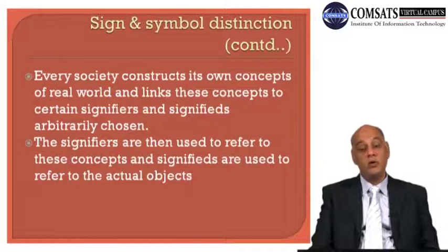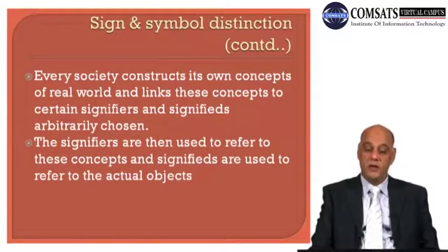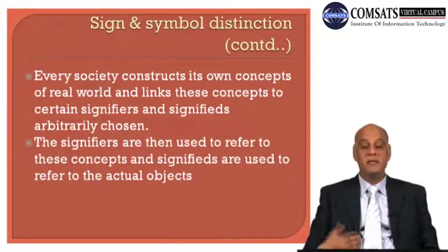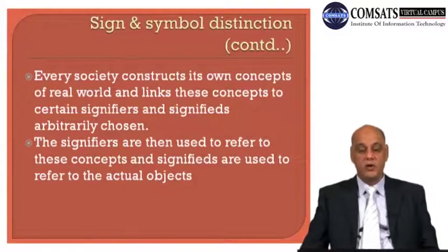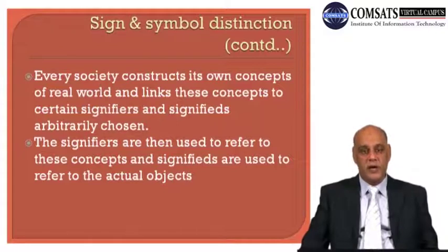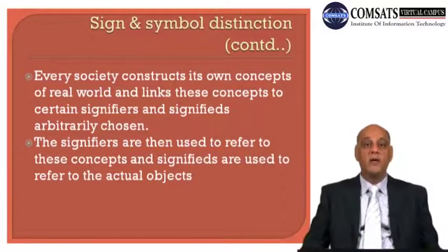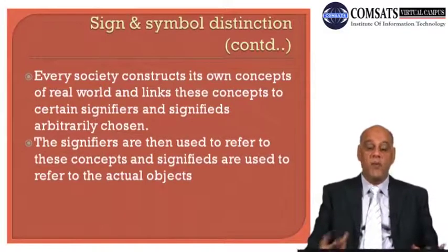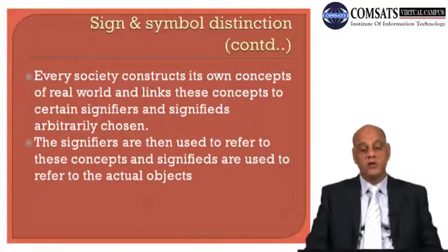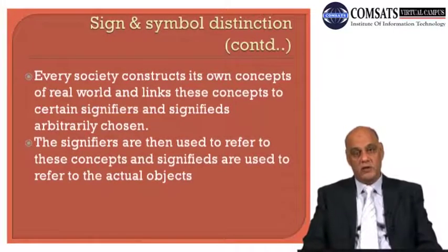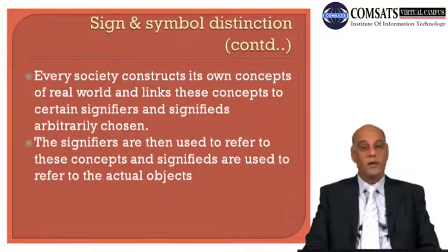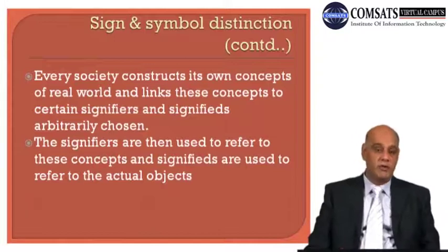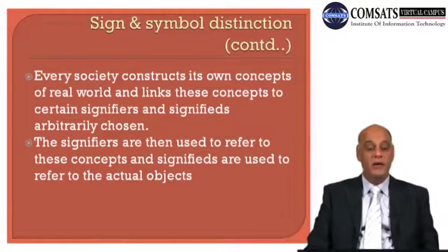Every society consists in its own concepts of the real world and links these concepts to certain signifiers and signifieds, arbitrarily chosen. The French society, the Arab society, people speaking Persian — different societies with different languages have their own concepts about the real world. They form their concepts and then link them to certain signifiers and signifieds. They invent words and assign them to different objects, and there is no logical reason behind this — the relationship is entirely arbitrary.